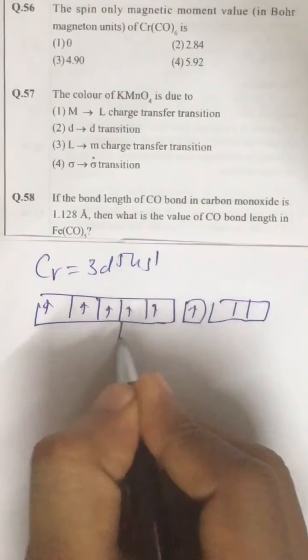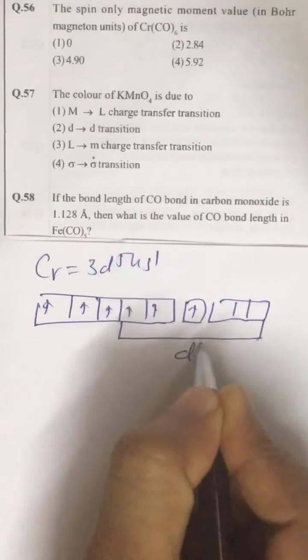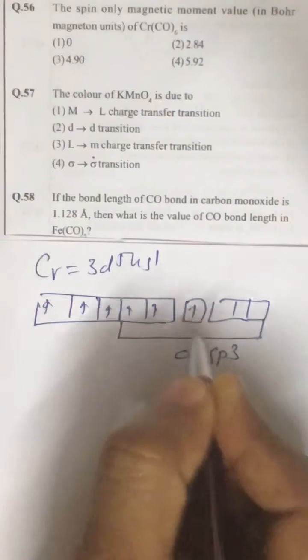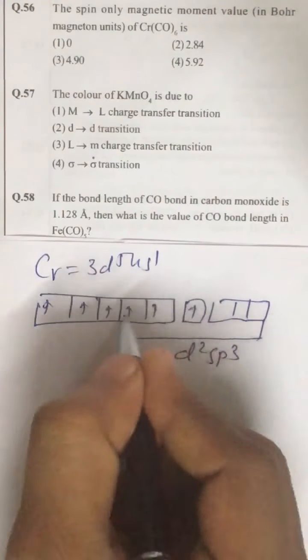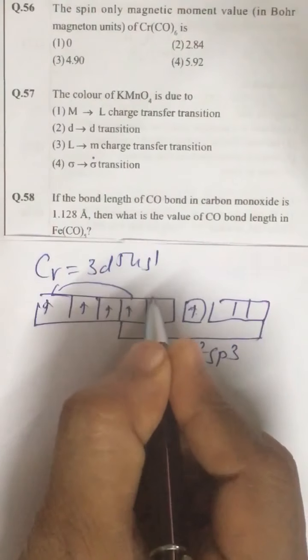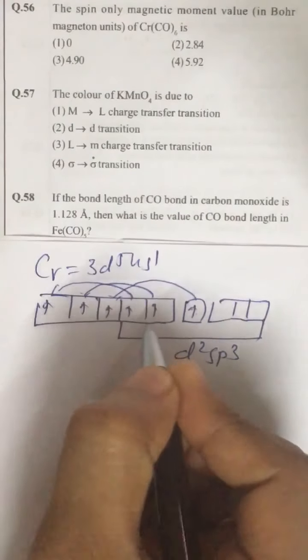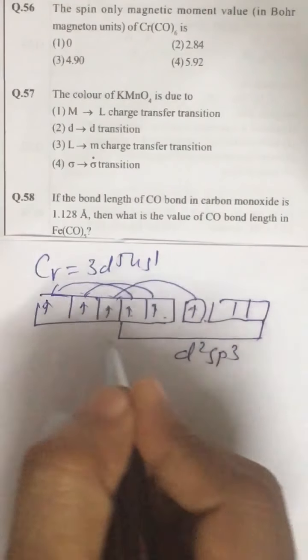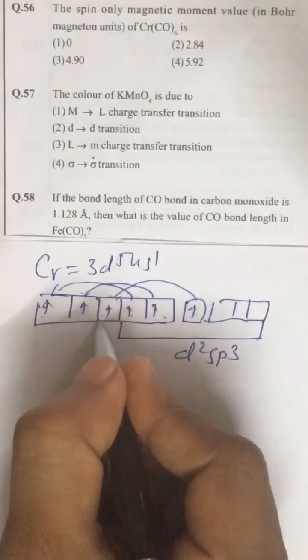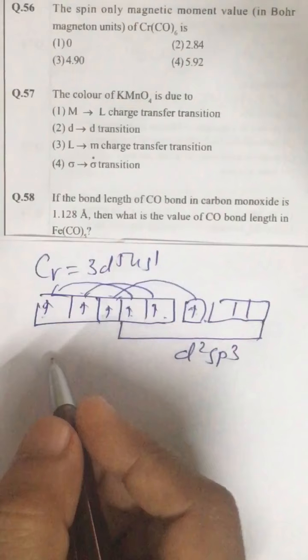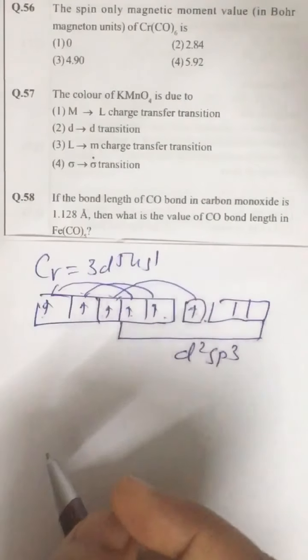The type of hybridization is D2SP3. So obviously, these 3 electrons must be vacated. So they get paired up like this. We don't have any unpaired electrons. All the electrons get paired up. So the magnetic moment is 0. Question number 56, correct answer is first option.